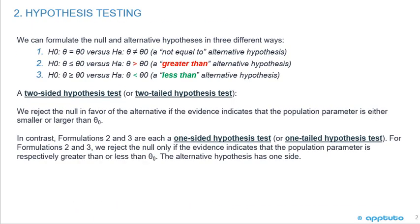We can formulate the null and alternative hypothesis in three different ways. One: the hypothesis equals zero versus the alternative hypothesis that doesn't equal zero. Two: the hypothesis that it is less than or equal to zero versus the alternative hypothesis greater than zero. And three: the hypothesis greater or equal to zero versus the hypothesis of less than zero.